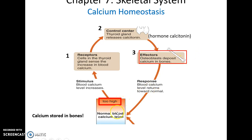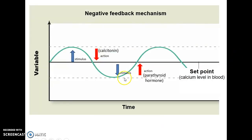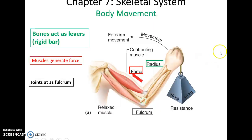If calcium levels get too low in the bloodstream, receptors in the parathyroid glands detect this and trigger the release of parathyroid hormone into the bloodstream. The parathyroid hormone reaches the osteoclasts of the bones, causing them to increase the amount of bone tissue they break down. This breakdown of organic material releases calcium into the bloodstream, returning blood calcium to normal. This is a negative feedback mechanism: calcitonin if calcium is too high, parathyroid hormone if it's too low.